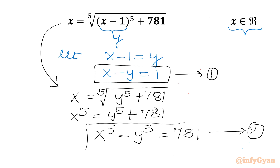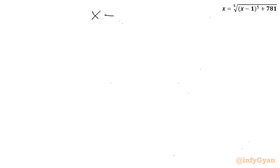So we have to solve this new system of equations: equation 1 is x minus y equal to 1, and equation 2 is x power 5 minus y power 5 equal to 781.